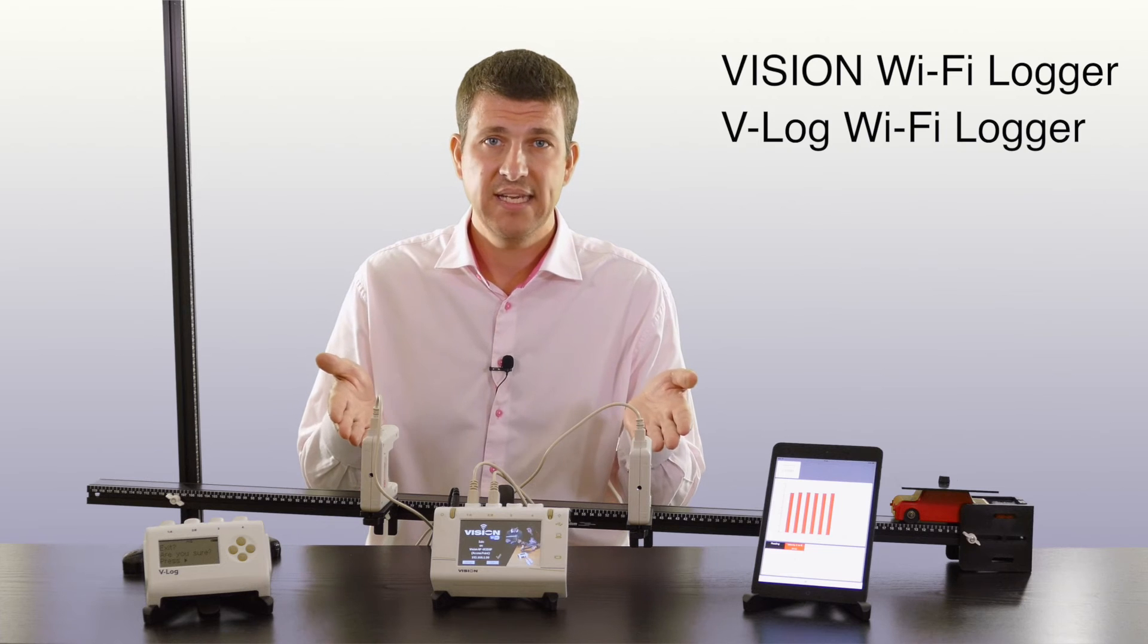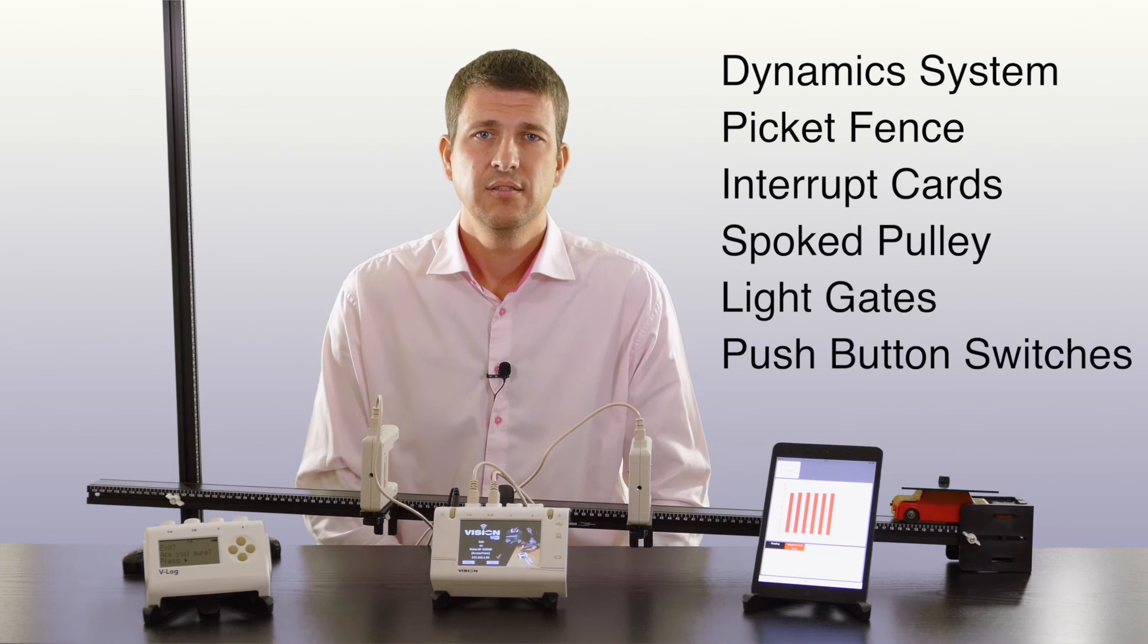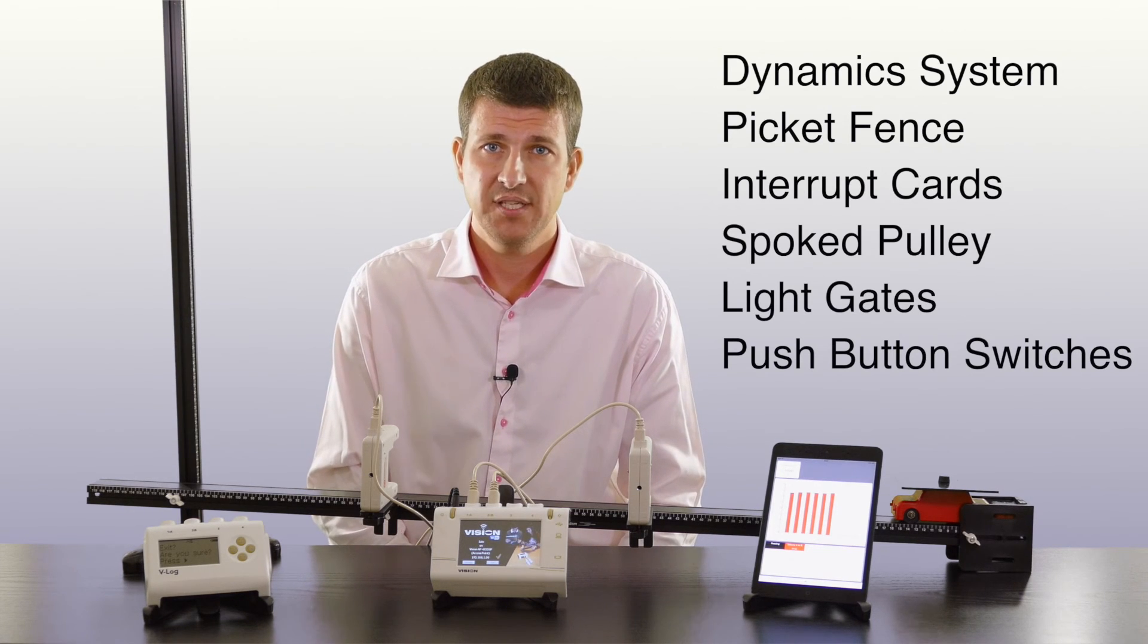We were using light gates a moment ago with the track. You can also use picket fence, double interrupt card, and our pulley for things like Newton's second law.